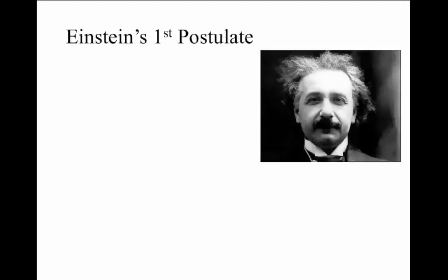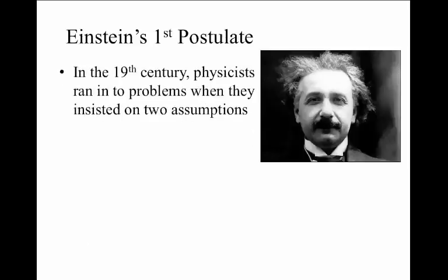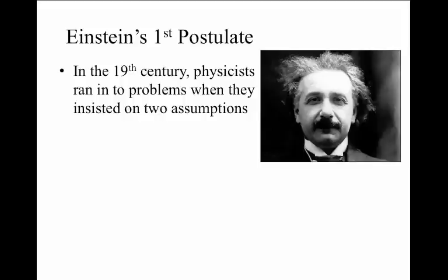Einstein developed two postulates upon which he based all of special relativity. His postulates replaced two fundamental problems or assumptions in 19th century physics. The first assumption was that there was such a thing as an absolute rest frame, referred to as the ether, where all speeds could be measured with respect to it. Einstein replaced that with a theory in which all reference frames were considered equal, and one could only judge relative velocities from one frame to the next, but could not judge an absolute velocity compared to an absolute rest frame.